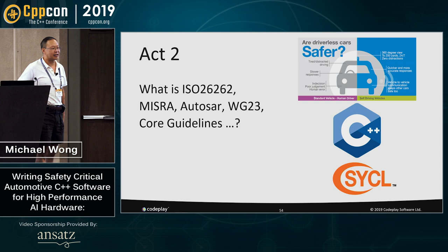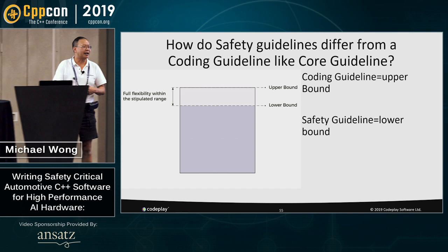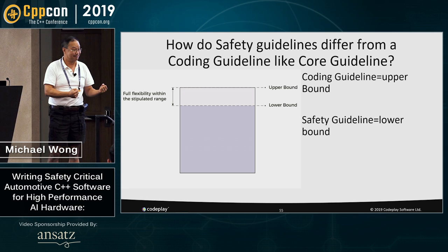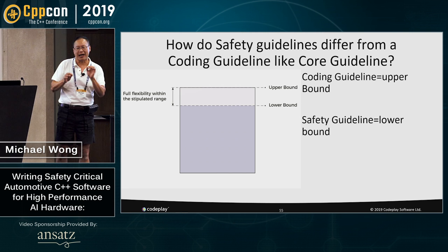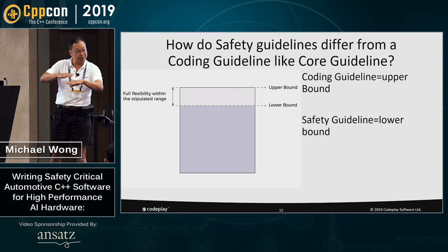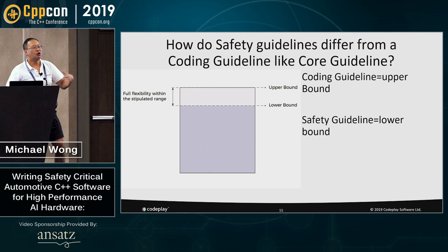Now it's time for Act 2. Coding guidelines define what's the upper bound of coding — if you write your code above this guideline, you have great and elegant code. But it doesn't say a whole lot about safety. What the safety guideline people are doing is saying there's a lower bound, and below this line you are writing unsafe code; above this you are writing safe code — not necessarily elegant code, but it's probably safe. You need to keep in mind the separation between coding guidelines and safety guidelines.